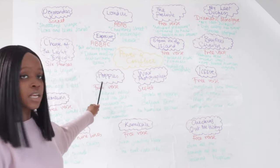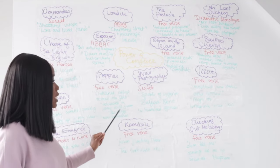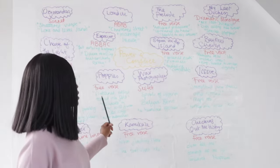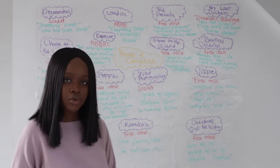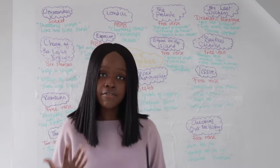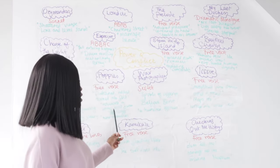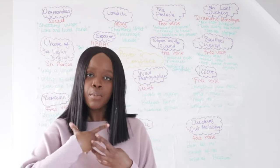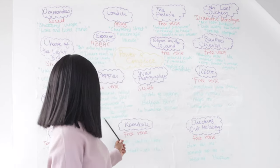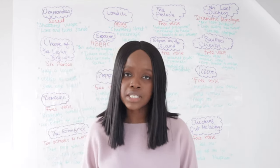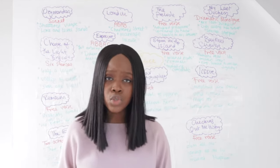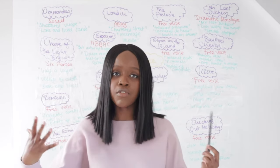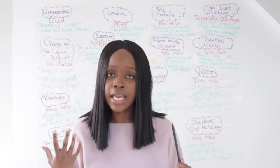The next poem is Poppies, written in free verse. The first quotation is 'flattened, rolled, turned into felt,' describing how the mother feels. The next quotation, 'released a songbird from its cage,' describes the mother almost feeling like she has let her son go — like releasing a beloved bird from its cage — suggesting her son may have died in battle. The final quotation, 'war memorial,' reminds us of Armistice Sunday and the sacrifice of soldiers in World War One and more generally.